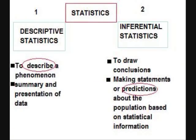Statistics branches off into two main groups. The first is descriptive statistics, and the second is inferential statistics. Descriptive statistics means to describe — the key word is describe. It involves the summary and presentation of data. Think about someone at a conference presenting with charts, pie charts, and bar charts — all those different visual understandings of the material. That's what descriptive statistics means.